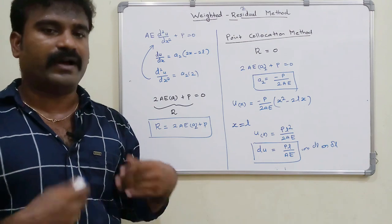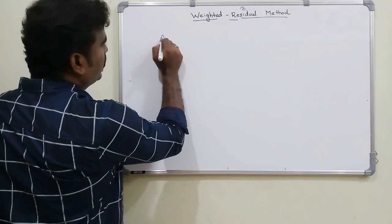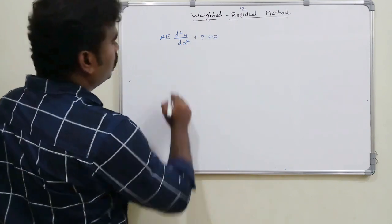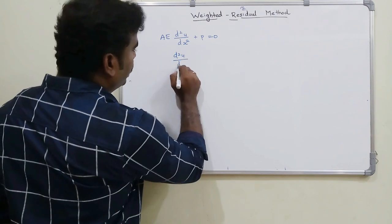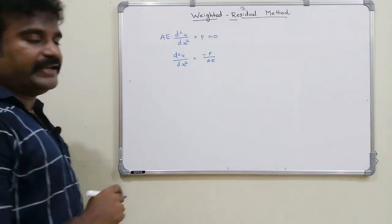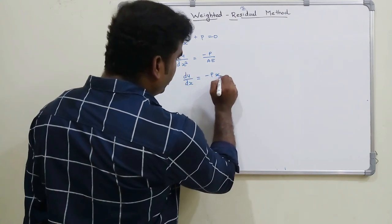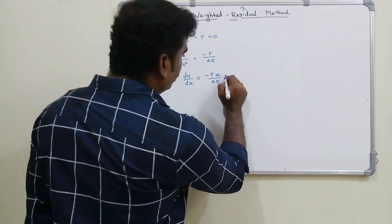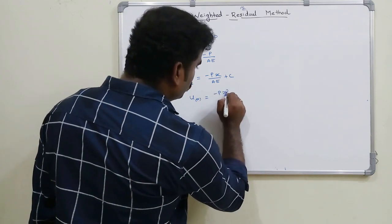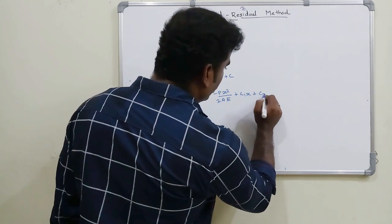Now we will find the exact solution by solving the differential equation directly. From AE · d²u/dx² + p = 0, we get d²u/dx² = −p/(AE). Integrating both sides: du/dx = −px/(AE) + c₁. Integrating again: u(x) = −px²/(2AE) + c₁x + c₂.